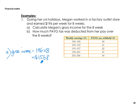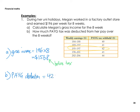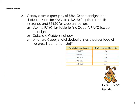Remember, this is gross — so this is before tax. For part B, how much PAYG tax was deducted from her pay over the eight weeks? We match the $196 to one of the table categories, which corresponds to $42. So PAYG deductions are 42 times 8 weeks, which equals $336.